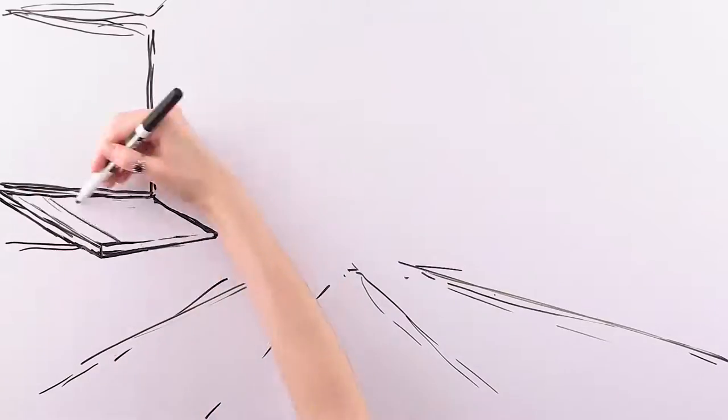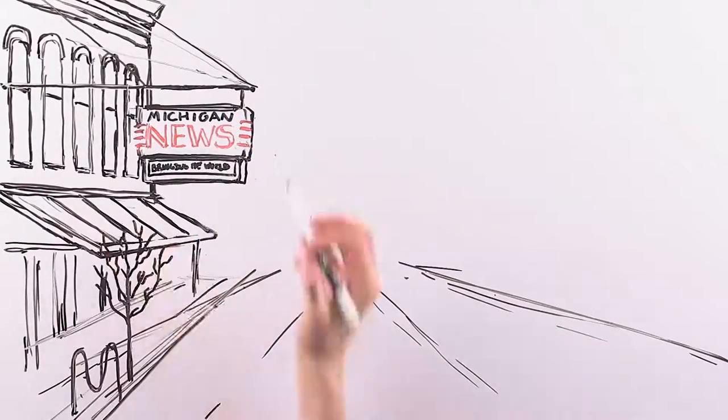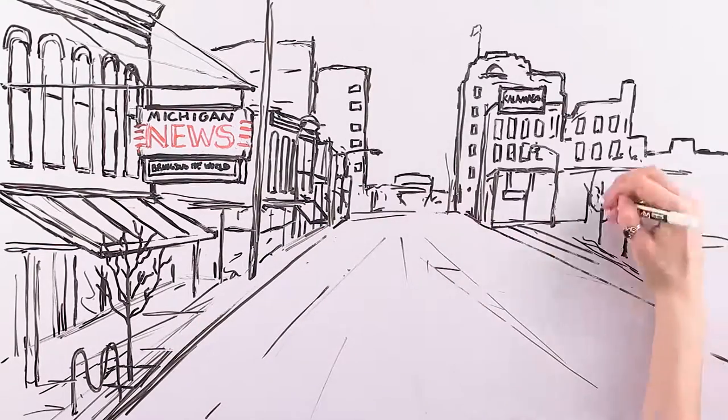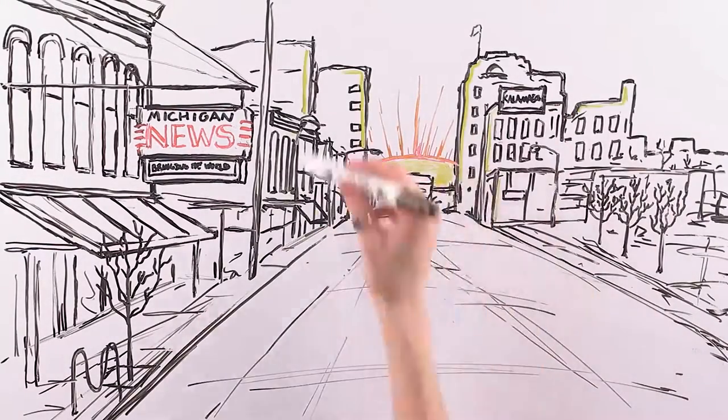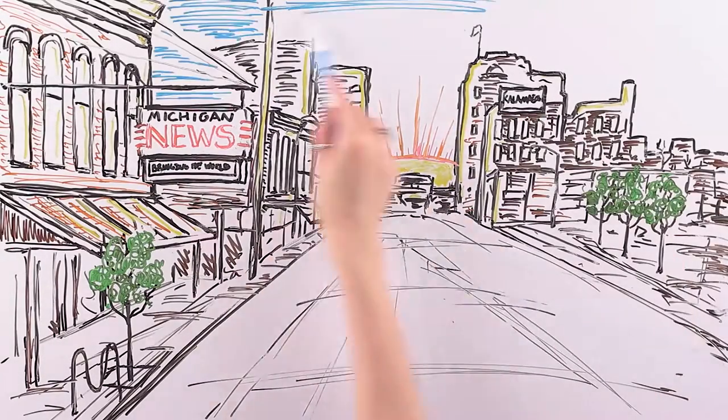During the 1980s, downtown Kalamazoo faced many challenges. Inspired by President Schlack's belief that a vital downtown was good for everyone, Kalamazoo Valley established a downtown center and developed new partnerships and initiatives to help meet the community's needs.